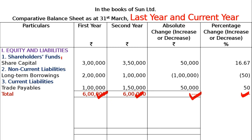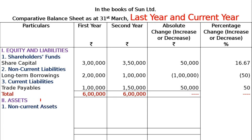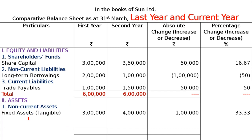After completing the liability side, move to the asset side. On the asset side, you have: Non-Current Assets, then Fixed Assets, then Tangible Assets — and also Current Assets, Trade Receivables, and the Total. This is the standard format of the balance sheet. First write 'Assets,' then 'Non-Current Assets,' then 'Fixed Assets,' then 'Tangible Assets' — which include land, building, plant, and machinery. Tangible assets are those with physical existence and economic value.